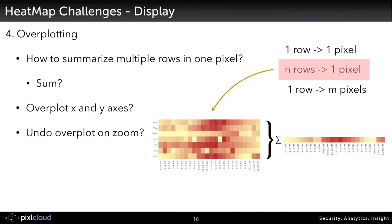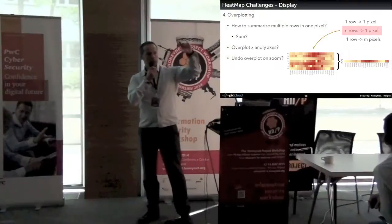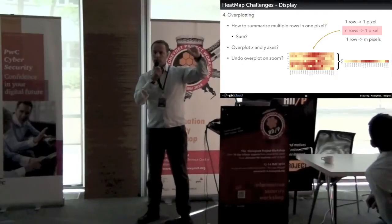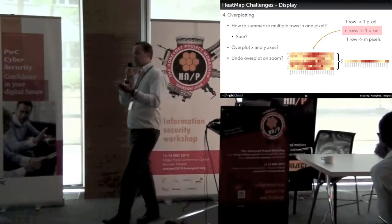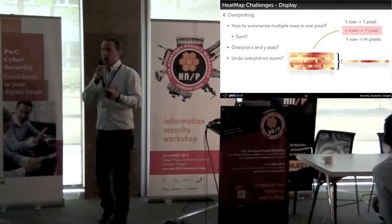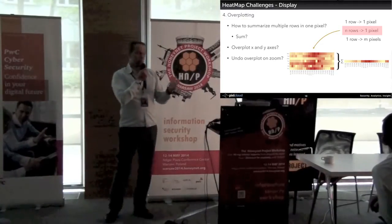Then assume you have 100,000 rows you want to show — I don't have a display with 100,000 pixels. I have to overplot: I have to aggregate different rows into one row. You can sum multiple rows, or average them. But now you've just lost information, and certain patterns might not be visible anymore.